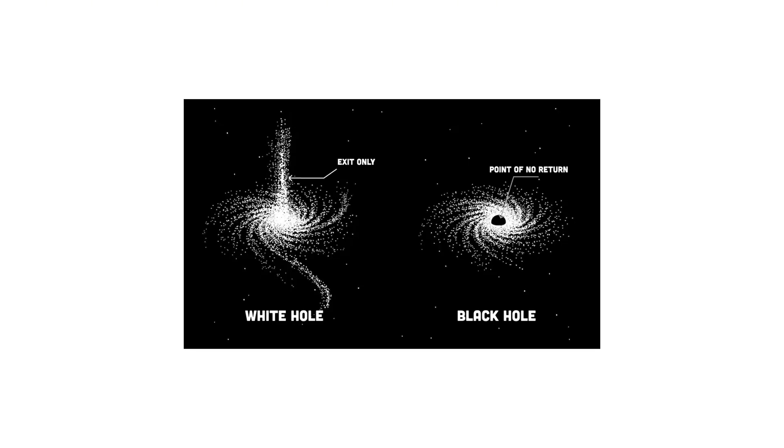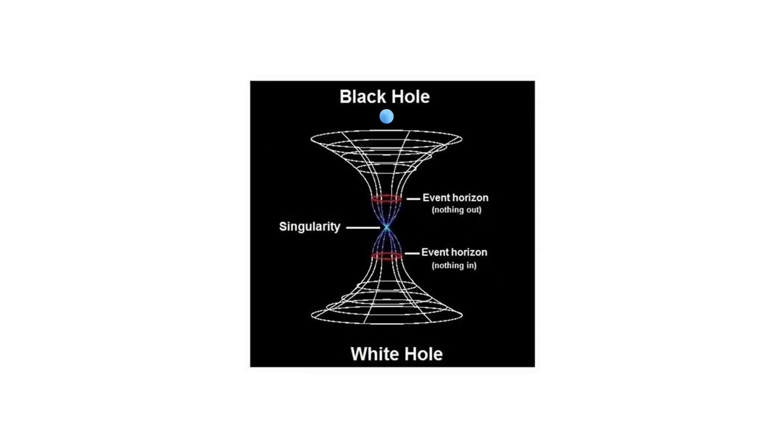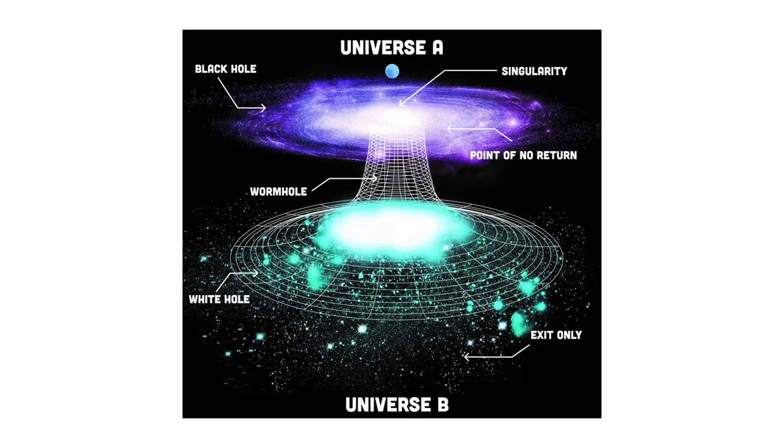While black holes suck everything in, including light, white holes are thought to spew out matter and energy but don't allow anything to enter, not even light. Imagine this. If you could enter a black hole and somehow survive passing through the singularity, you might emerge from a white hole at a different point in spacetime, potentially in the past. Another possibility is that white holes could be the other end of a wormhole, connected to a black hole.